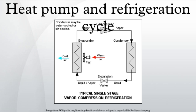The superheated vapor travels through the condenser which first cools and removes the superheat and then condenses the vapor into a liquid by removing additional heat at constant pressure and temperature.